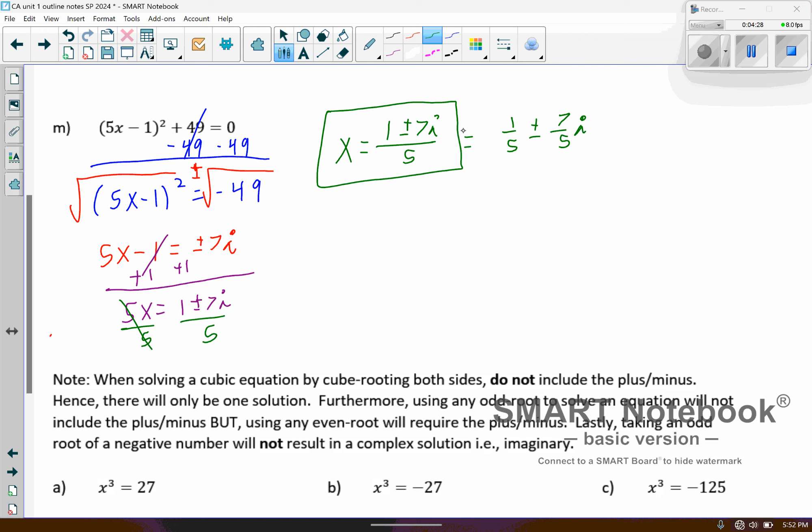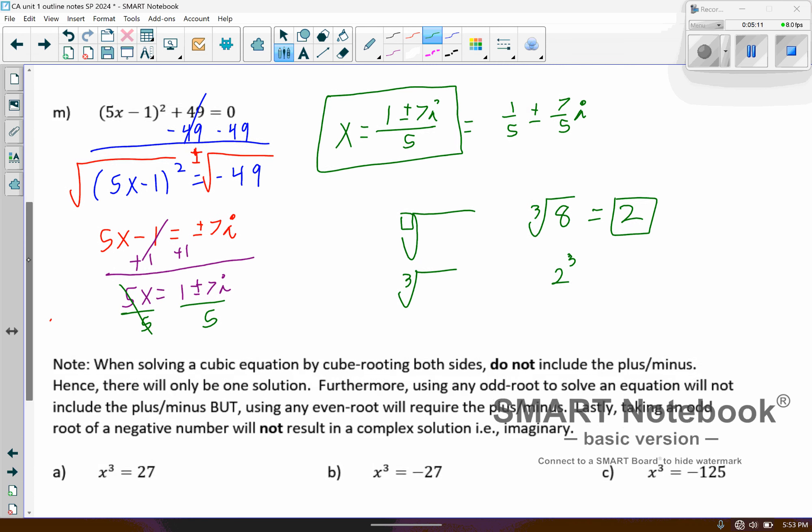And so now we're going to look at maybe a couple special cases. I at least want to highlight a couple differences depending on the index. Now, the index is the root that you're taking. All these were square roots. The index is this value here. Sometimes you might want to take a cube root. For example, the cube root of 8 would be 2, because 8 could be written as 2 to the power of 3, right? And the cube root nullifies that cube power. So we're going to see a couple of examples.